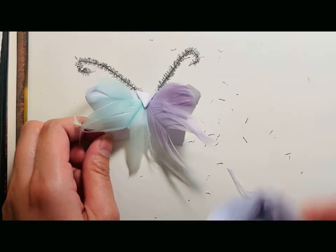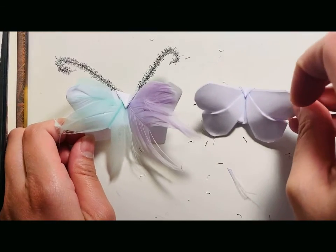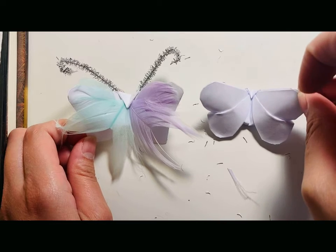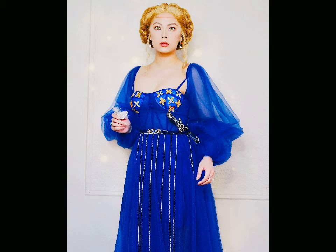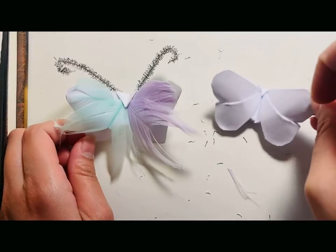And here we have the fluffy moth side by side with the original origami shape. This is the full look. Thank you so much for joining us for today's character DIY. I hope you try this at home and if you do, please post pictures and tag us. Until next time, bye!